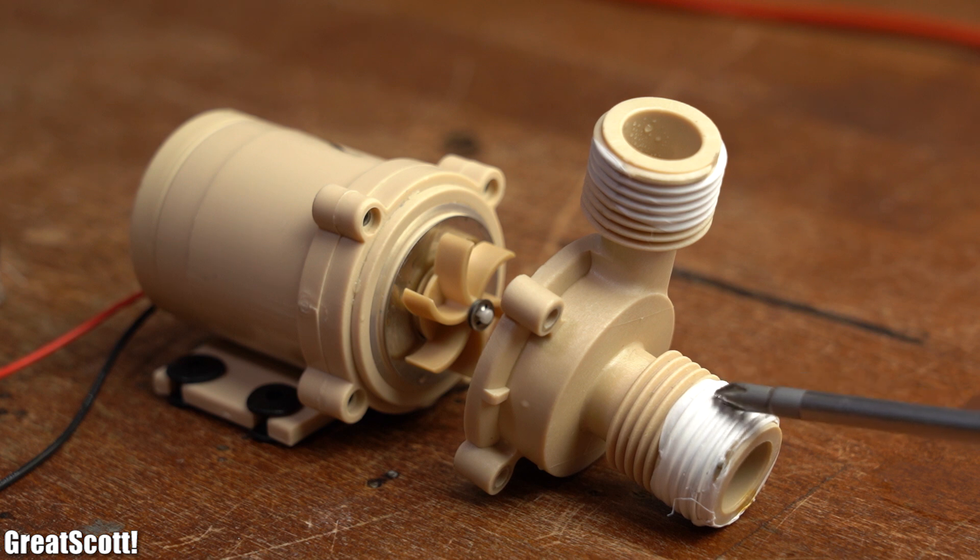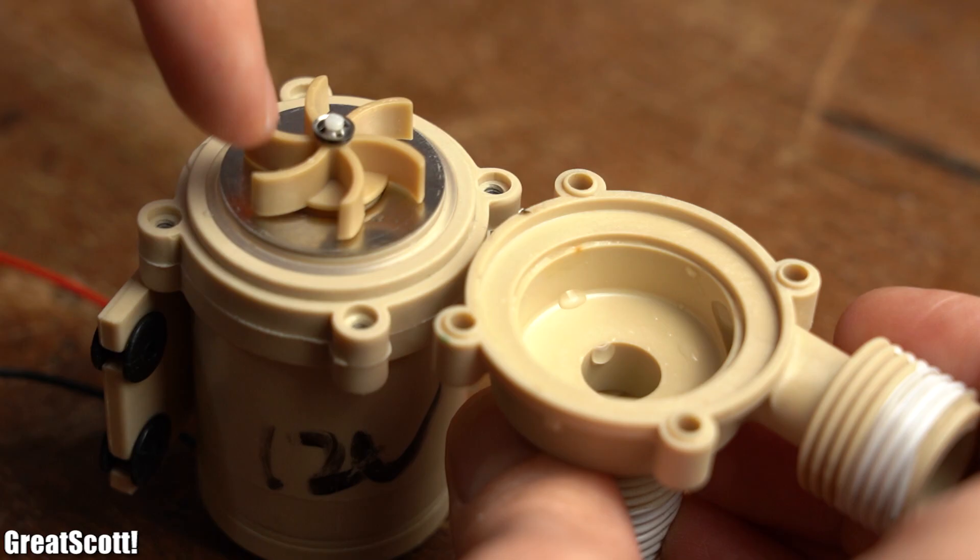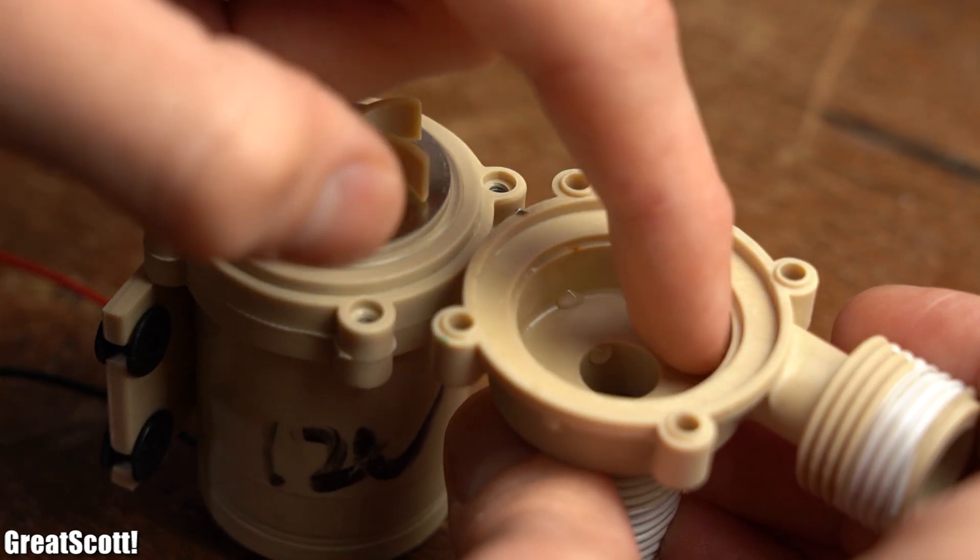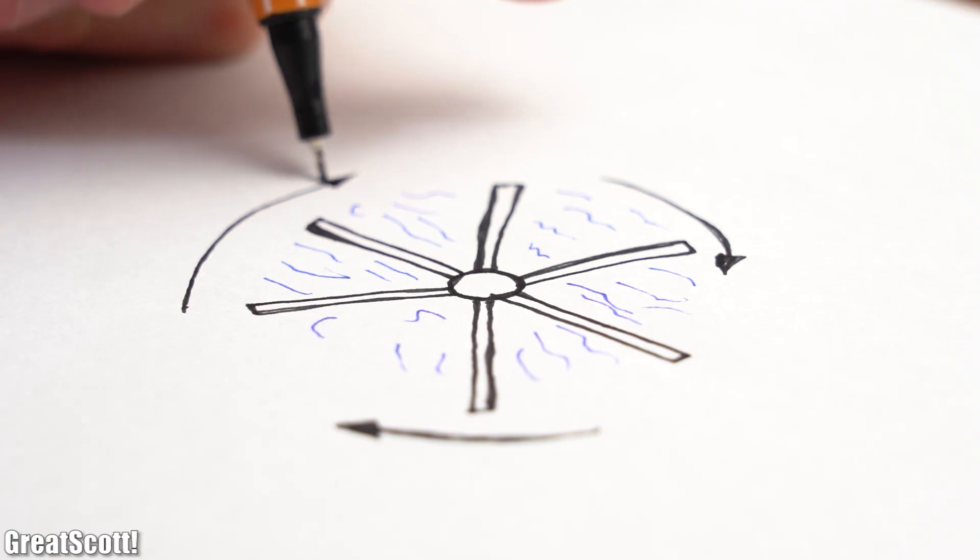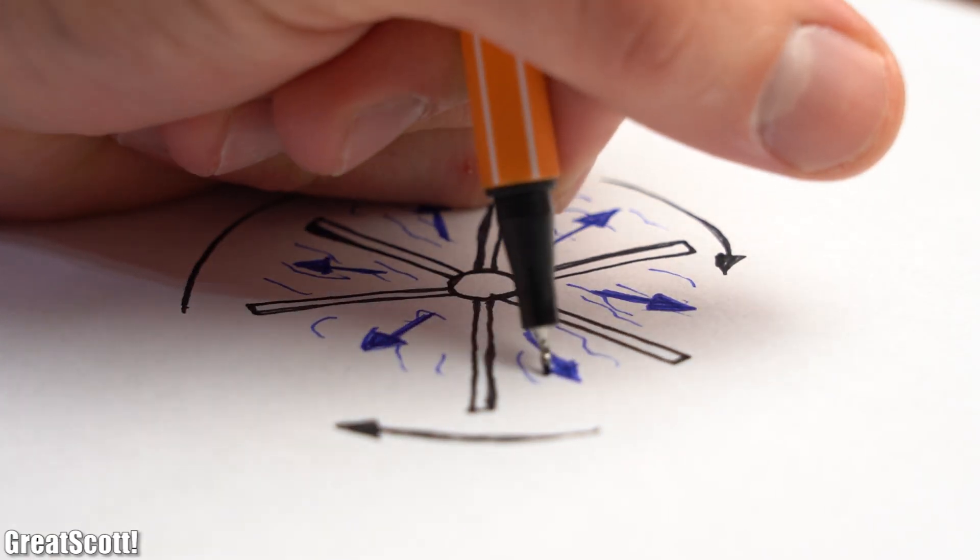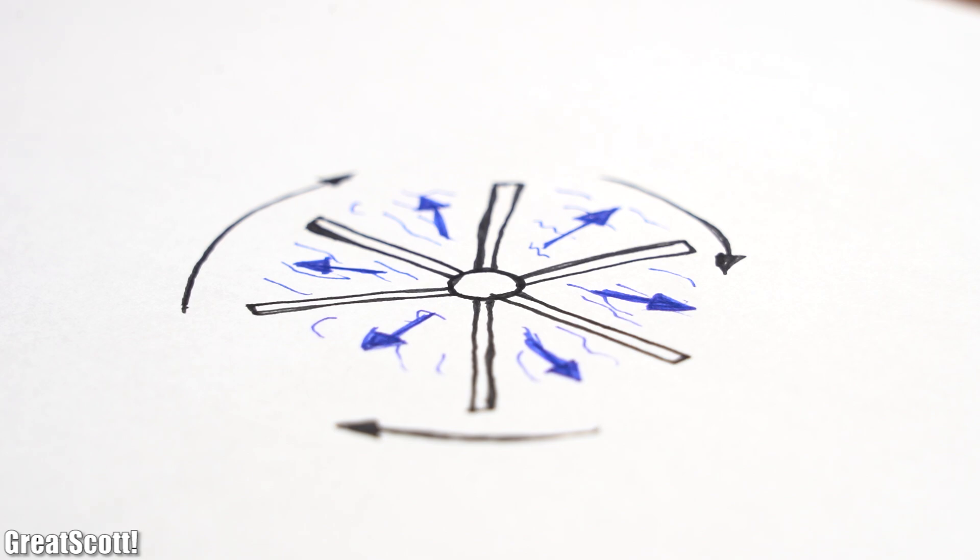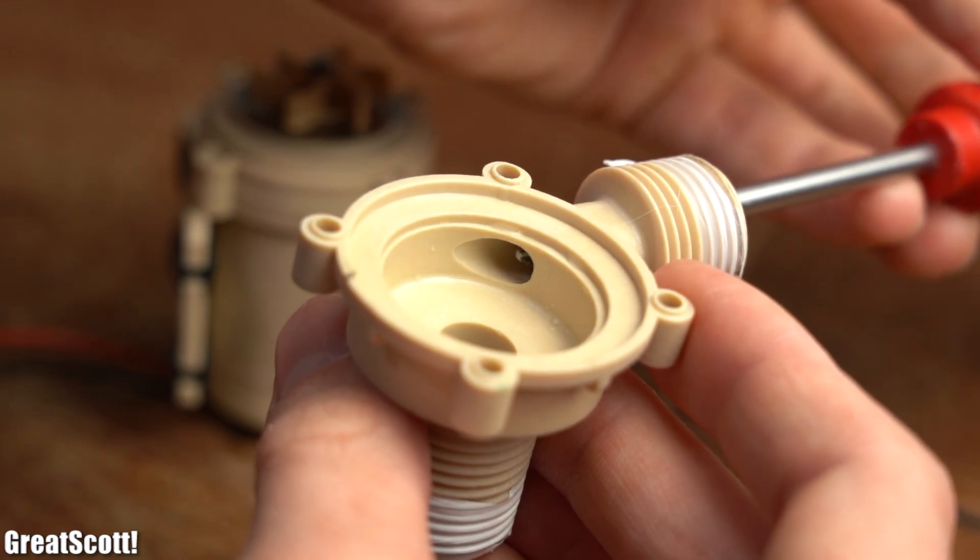After removing the front piece, we can see a wheel which was being turned by the utilized motor. So what happens is that the water enters through this hole and fills up the entire space around the wheel. And while the wheel is spinning, it accelerates the water which flows radially outwards and into a hole where it exits.